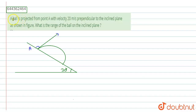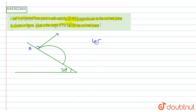The question is: a ball is projected from a point A with a velocity of 20 meters per second perpendicular to the inclined plane, as shown in the figure. What is the range of the ball on the inclined plane? We have to find the range on the inclined plane, and it is given that U is equal to 20 meters per second.